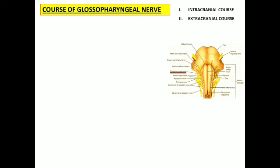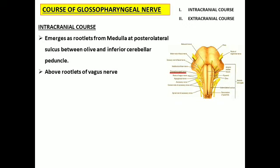Now let us explain the course of the glossopharyngeal nerve. Under the course, we will explain two headings: the intracranial course — within the cranial cavity — and the extracranial course, outside the cranial cavity. For the intracranial course, remember that from the nuclei, the fibers of the glossopharyngeal nerve emerge as rootlets. These nerve rootlets emerge from the medulla of the brainstem, exactly at the posterolateral sulcus, between the olive and inferior cerebellar peduncle.